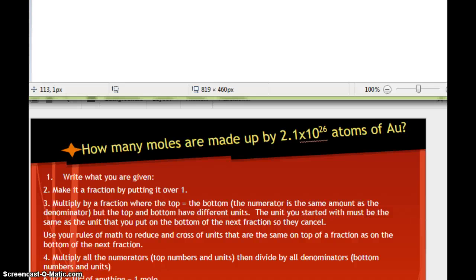Alright, so the first step is, write down what you are given. So we're going to start with 2.1 times 10 to the 26th, over... my mouse is not wanting to write for me. Let's try this way. Over 1. But I'm not done. I have to write what it is, and so it is atoms of AU.